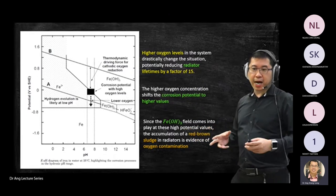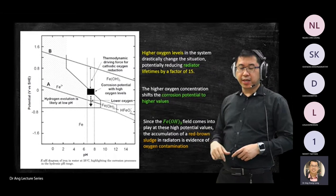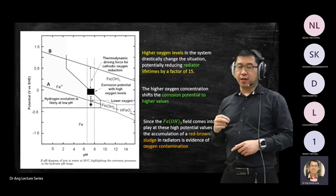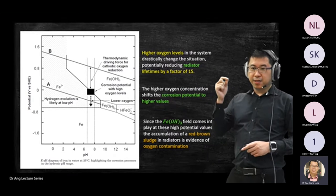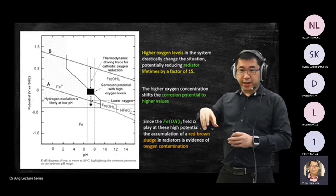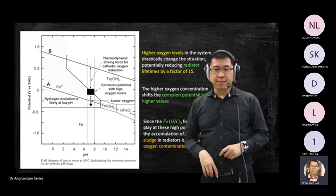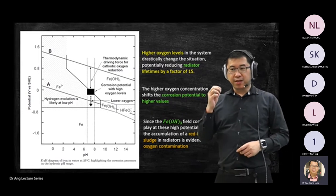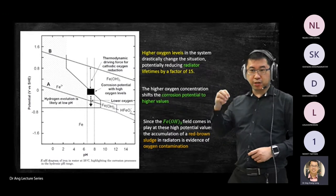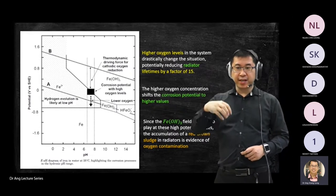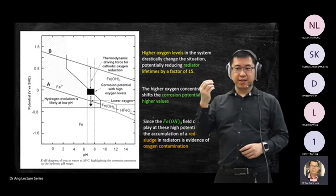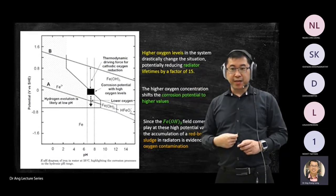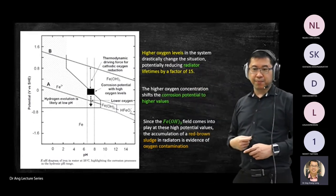In an old car, when you open the radiator you see an orange-colored solution — that is the corrosion product. A new car normally uses a chemical solution poured into the radiator to protect it from producing that orange compound.